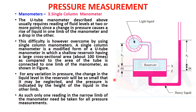In the next lecture we are going to see differential manometers, which are mostly used in industry. In a differential manometer, both points where pressures are to be measured are connected to the system. This is unlike what we have seen so far, where one point is connected to the system and the other is open to atmosphere. We will also cover various types of mechanical gauges for pressure measurement.